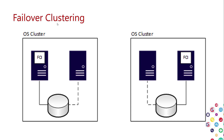After failover, the SQL instance on the original primary node is shut down and brought up on the secondary node at the same time the storage is moved over. Storage is mounted, SQL comes up, and to SQL it looks exactly the same — running against the same data, all the same databases, same master. It just happens to be running on new hardware.